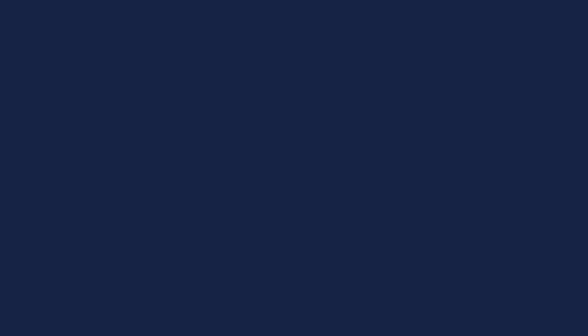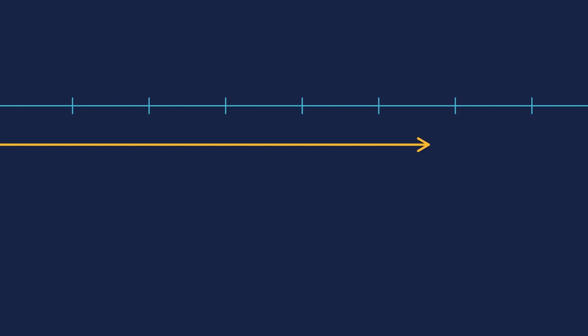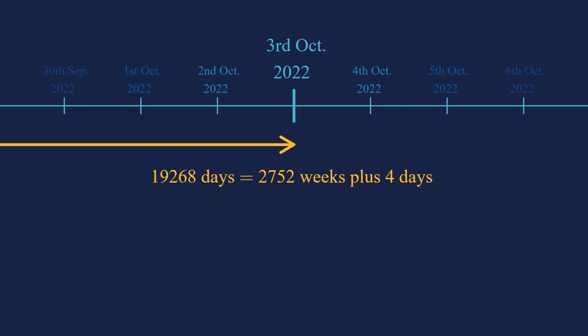Finding the weekday of a given date is not a difficult task. You pick any date as a starting point, say the 1st of January 1970, which was a Thursday, and then you count to the day you are interested in. Take the day this video was released, the 3rd of October 2022, which is 19,268 days after the 1st of January 1970. That's 2752 full weeks plus four days. So it's a Monday.